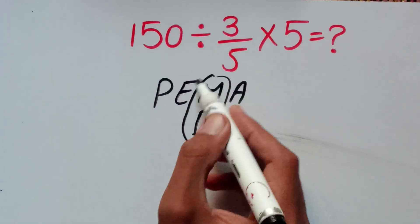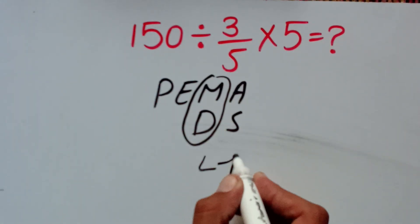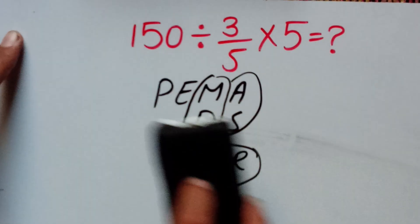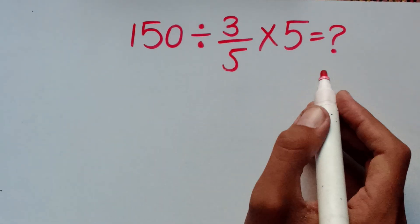Trust me, multiplication and division have equal priority and we solve them from left to right. Similarly in the case of addition and subtraction. Now I will solve this question by the correct method.